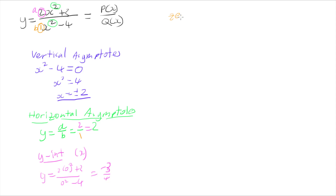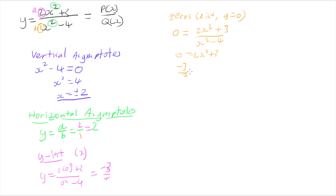The next thing to look at is the zeros of this function, or x-intercepts, where y = 0. Setting 2x² + 3 over x² - 4 equal to zero and multiplying up the denominator gives 0 = 2x² + 3. Rearranging, x² = -3/2, which means I'd need the square root of a negative number, so there are no real zeros to this function.